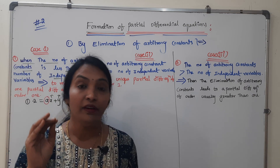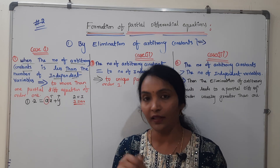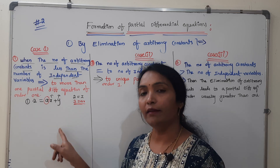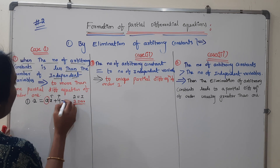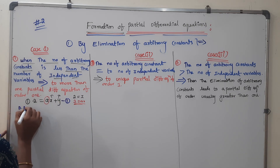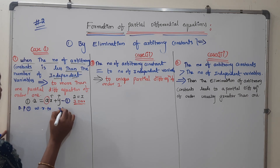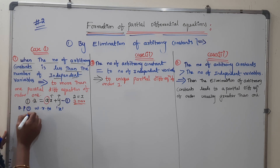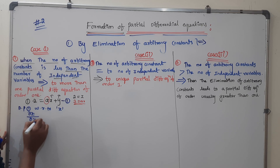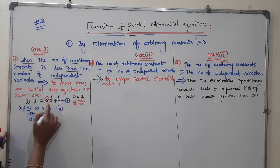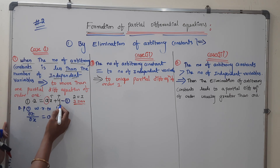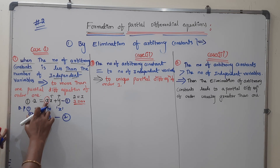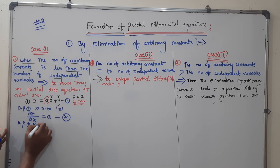Now if I have arbitrary constants, I will do the same number of partial differentiations. The independent variables are x and y. Differentiate equation 1 partially with respect to x: dou z by dou x is equal to a, since y is treated as a constant (value 0). This gives equation 2.